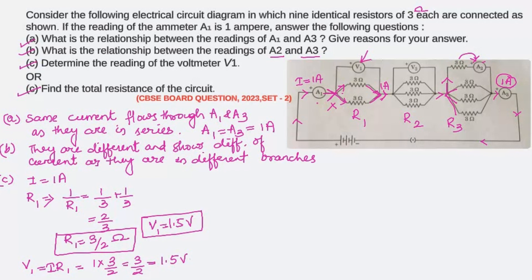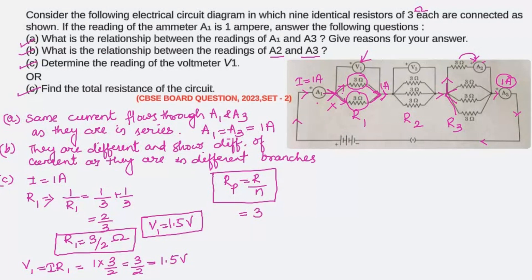There is an easier way to find equivalent resistance when identical resistors are connected in parallel. The formula is R_p = R/n, where R is the value of each identical resistor and n is the number of resistors. For R1, R is 3 ohm and n is 2, giving R1 = 3/2 ohm — found very quickly.